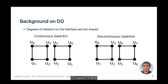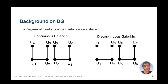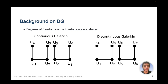Some background on discontinuous Galerkin: for continuous Galerkin, the degrees of freedom on the interfaces are shared between elements. For discontinuous Galerkin, each element has its own degrees of freedom on the interface. As shown in the figures, on the left u3 and u2 are shared between the two elements, while on the right one element has u2 and u3 and the other has u5 and u8.